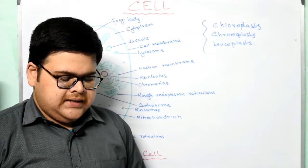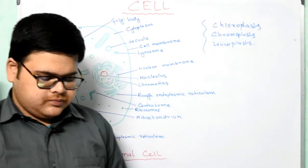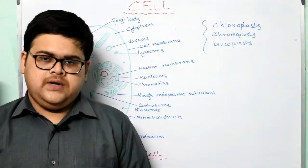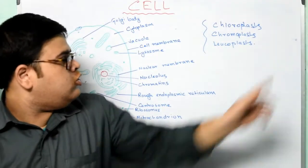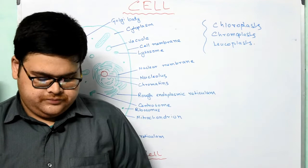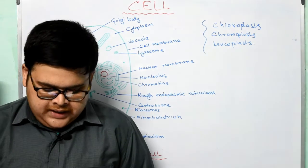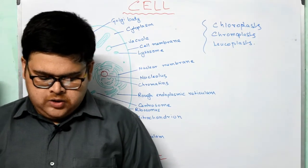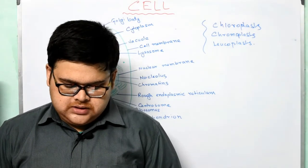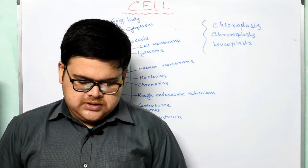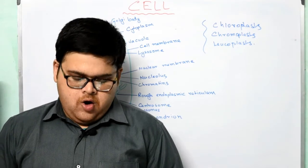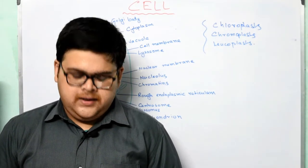Chloroplasts are green plastids as they contain the green pigment chlorophyll. Chloroplasts trap solar energy and convert it into chemical energy in the form of food through the process of photosynthesis. Chloroplasts are present in the green parts, leaves, and young stems of plants.